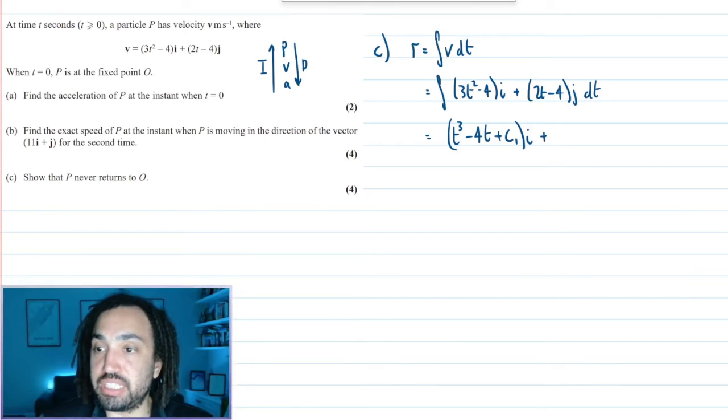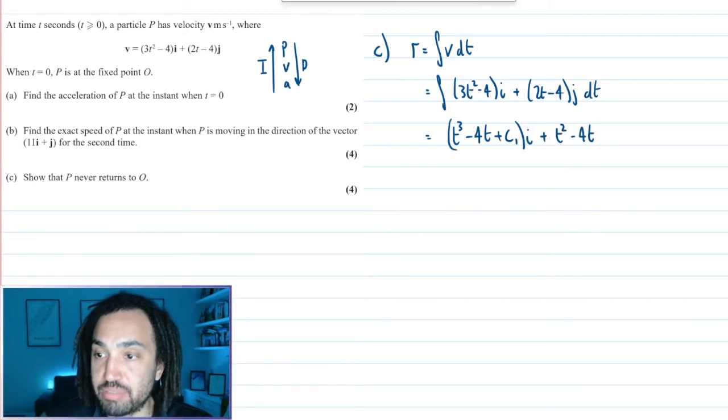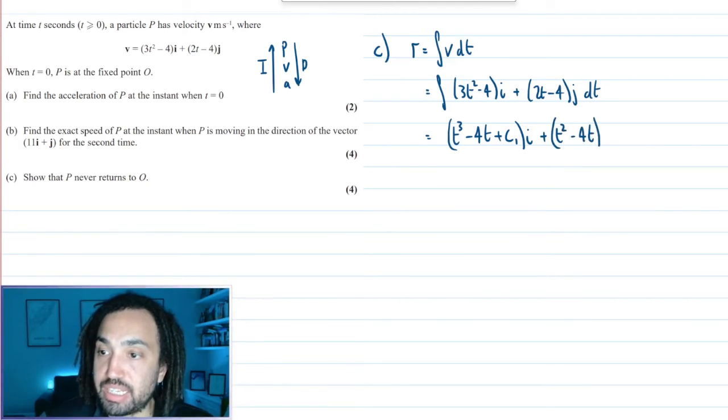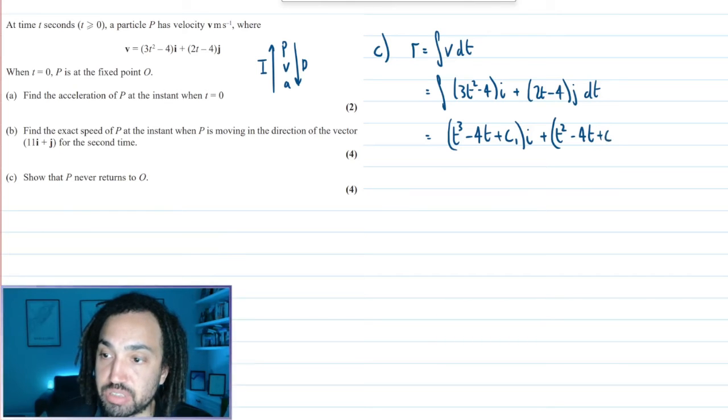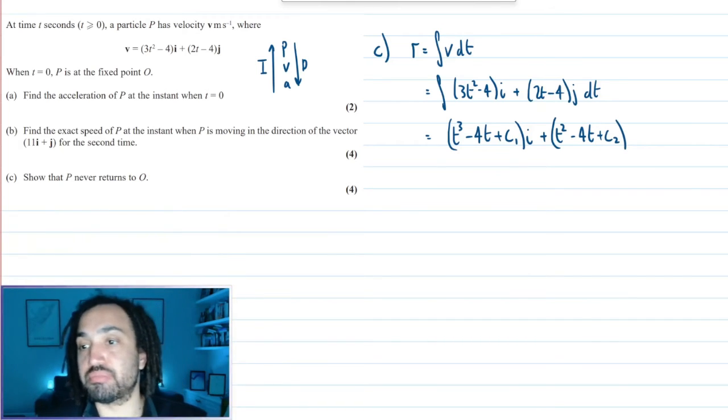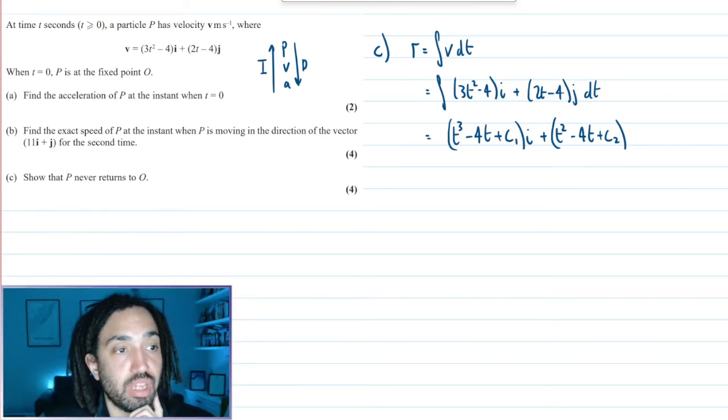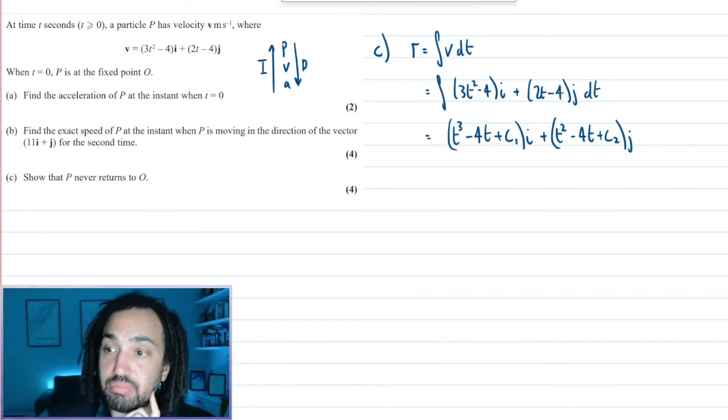And there will also be a constant of integration in the i direction, I'll call c1. Plus integrating the j's is going to give me t squared minus 4tj. And again, there will be a constant of integration in the j direction, I'll call it c2.